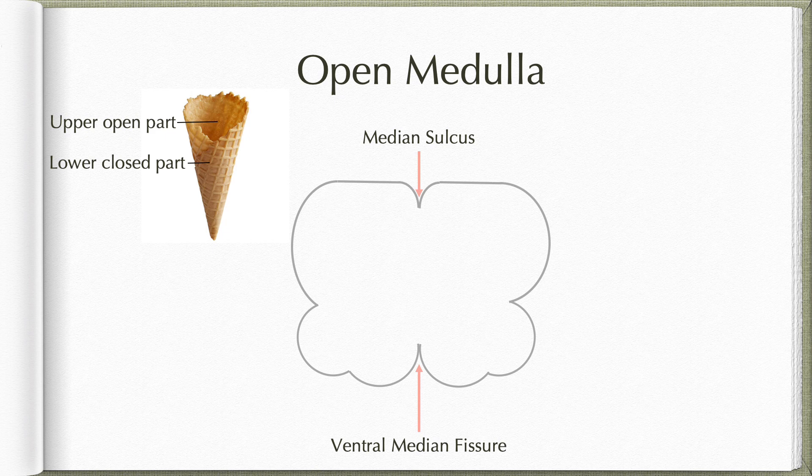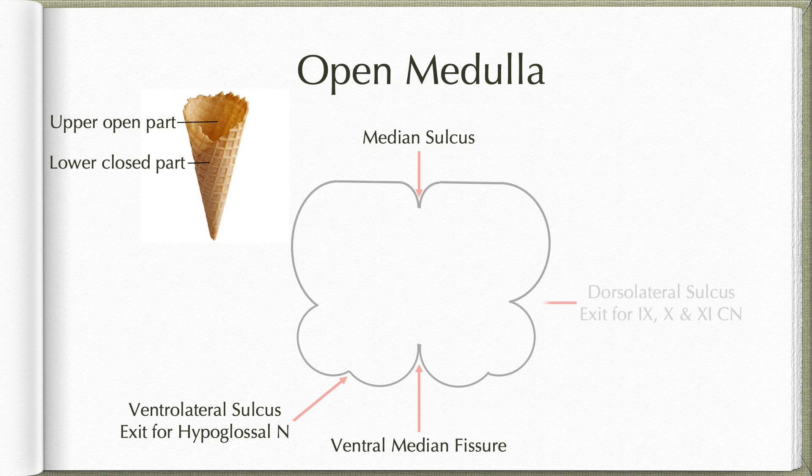On either side of the ventral median fissure, we find the ventrolateral sulcus along which the rootlets of the hypoglossal nerve will be exiting. More laterally, we have the dorsolateral sulcus along which the rootlets of the 9th, 10th, and 11th cranial nerves will be exiting from above downwards.